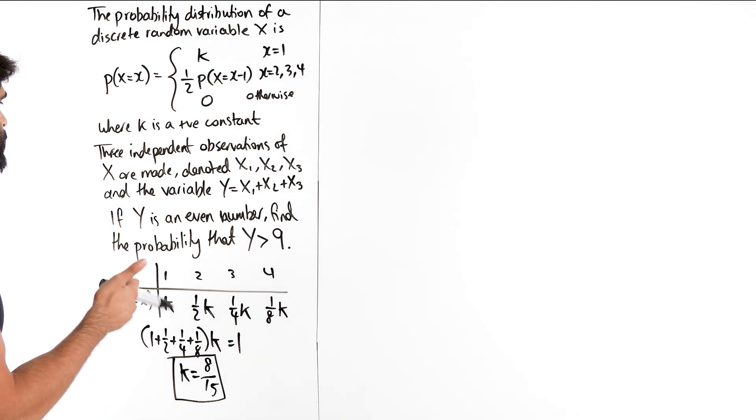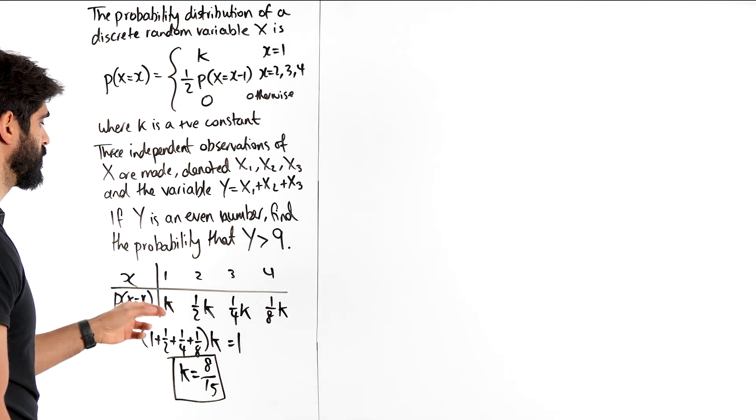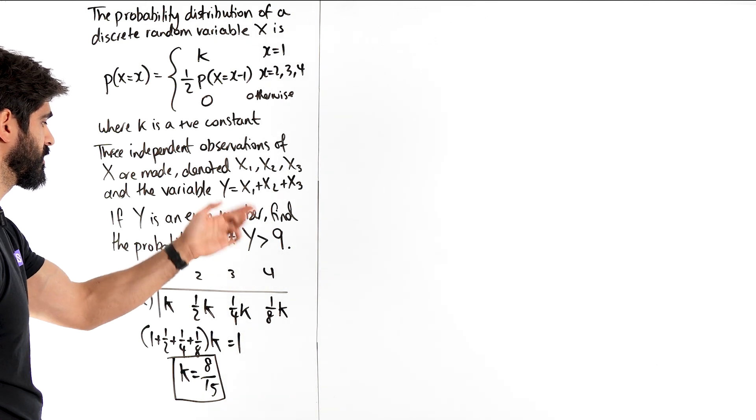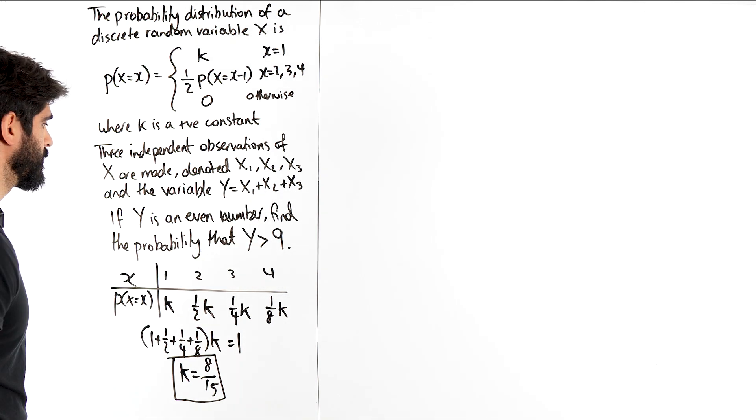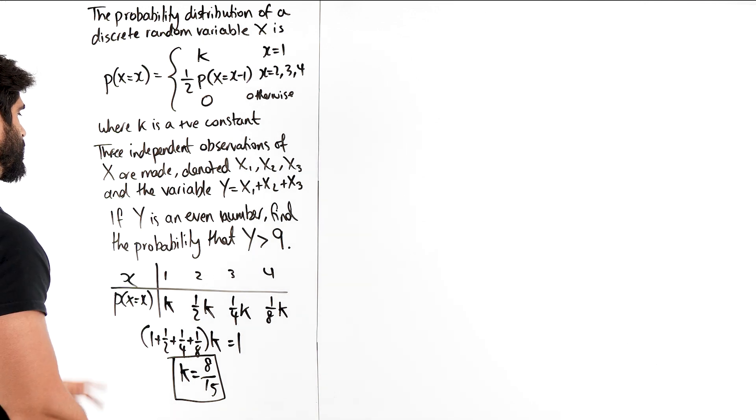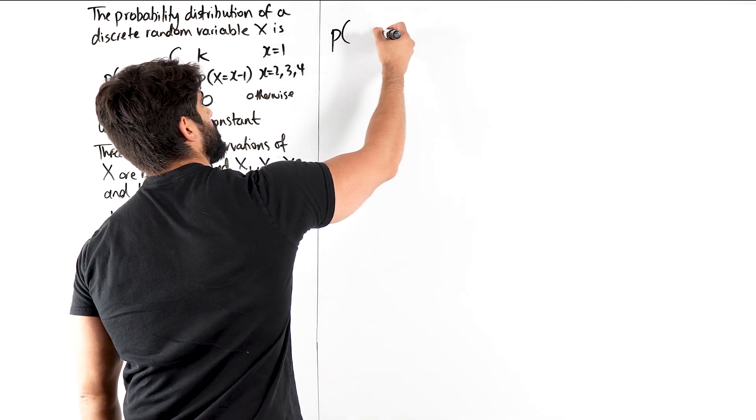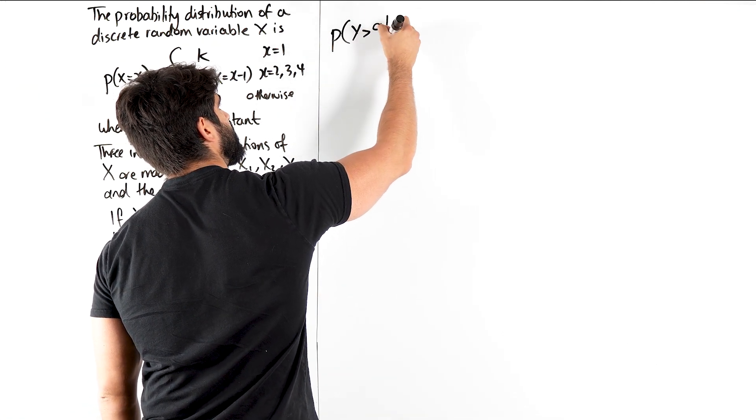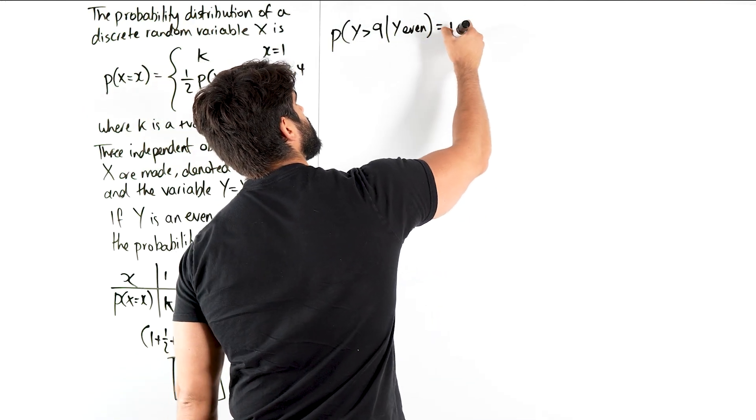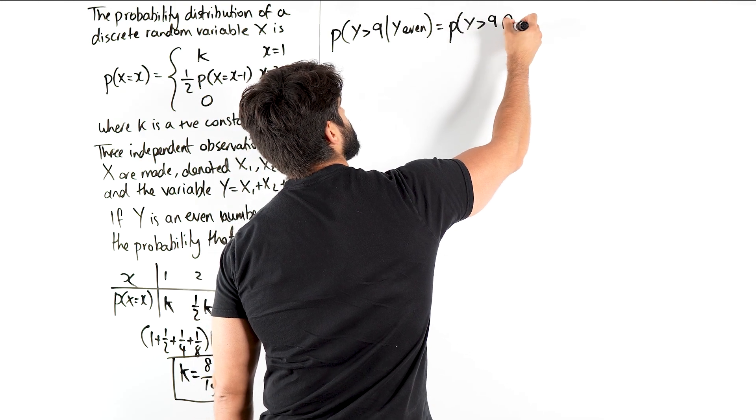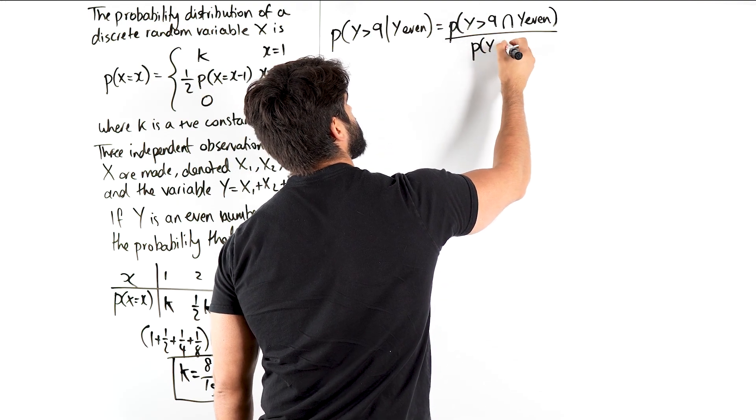It says three independent observations of this are taken. You could have a 2, you could get an outcome of 2, and then you could get a 4, and then you could have got a 1. What those outcomes are is we're adding them up. Saying if y is an even number, so given y is even, what's the probability that y is bigger than 9? So the probability of y being greater than 9 given y is even. That's a given statement. So here becomes the probability of y being greater than 9 and y being even, divided by the probability of y being even.